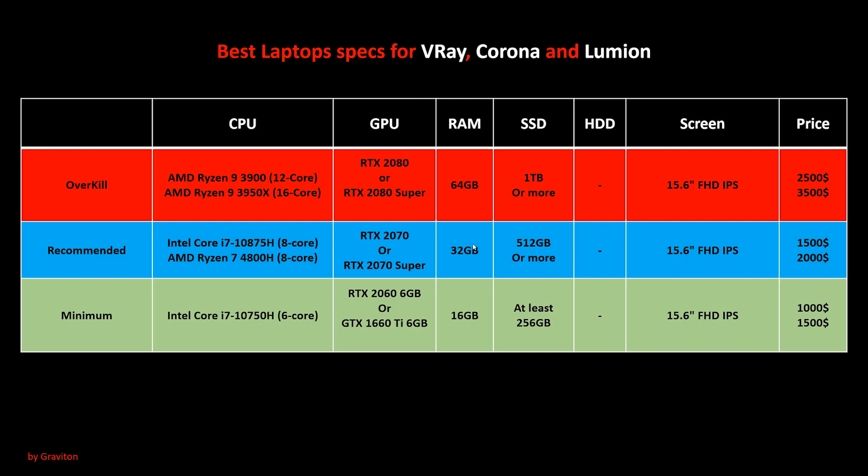Now let's move on to the recommended specs. I recommend choosing a CPU with 8 cores, which will give you 16 render threads. So choose either the Intel Core i7 10875H or the AMD Ryzen 4800H — both will give you a very good rendering speed. For the GPU, I recommend choosing either the RTX 2070 or the RTX 2070 Super, which is the better version. These have 8GB of VRAM, giving you very good performance in Lumion — you can work with larger scenes. For the RAM, 32GB is the sweet spot, and for the SSD, 512GB will give you enough space for Windows and all your programs.